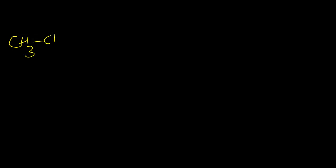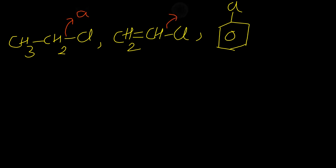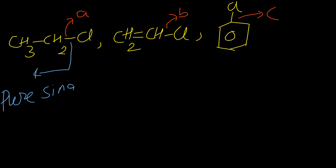Now we have CH₃CH₂Cl (molecule A), CH₂=CHCH₂Cl (molecule B), and a third molecule C. In molecule A (CH₃CH₂Cl), this is a fixed pure single bond — no resonance at all. Pure single bond.